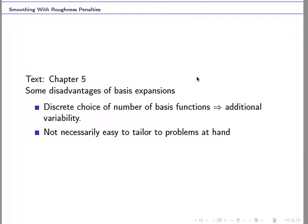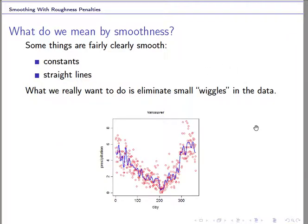Today we will talk about another method called smoothing splines. Basically, we will add a roughness penalty on the estimation to control and prevent the overfitting problems.